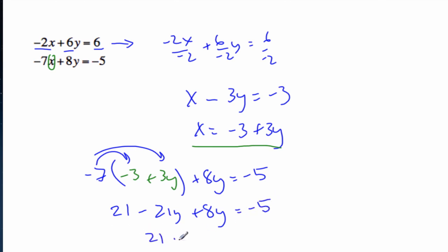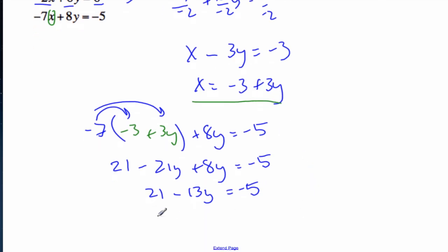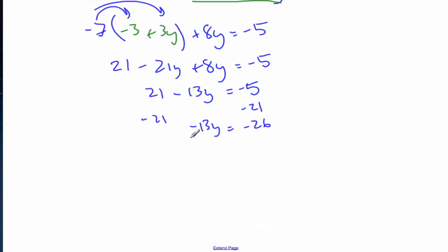21 minus, uh-oh, 13y equals minus 5. And I'm going to subtract my 21. So minus 13y equals negative 26. Divide by negative 13, and I get 2 for my y value.